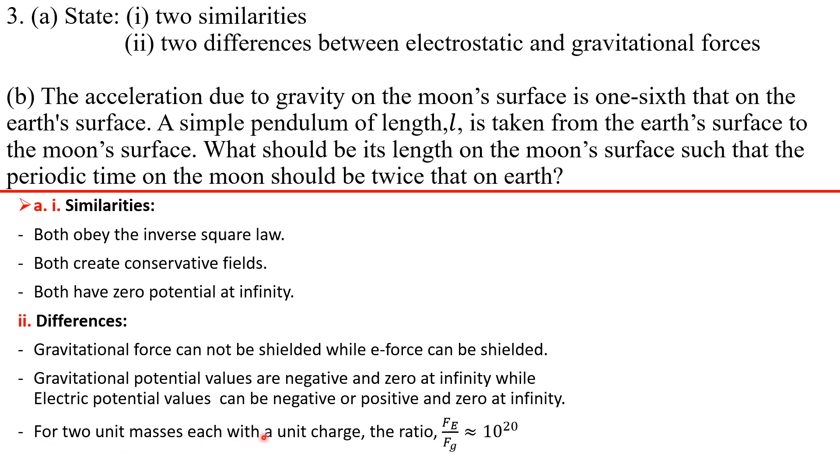What are the differences? For two unit masses each with a unit charge, the ratio Fe to Fg is approximately 10 to the 20. Why is this a difference? You're saying that the electrostatic force between two point charges, unit charges, is about 10 to the 20 times greater than the gravitational force between two unit masses. And this is a huge difference in strength of the electrostatic force relative to the gravitational force.